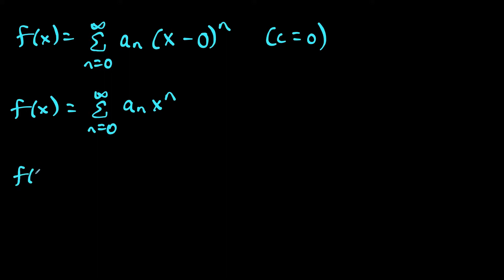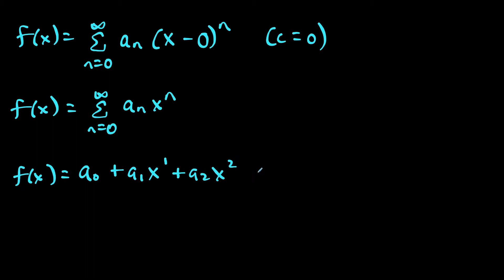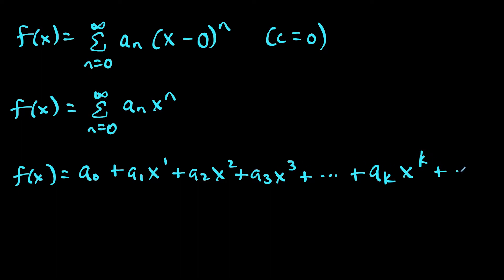The way that we derive this formula is we expand this series. We're going to have a sub 0 plus a sub 1 times x to the first, a sub 2 times x to the second, a sub 3 times x to the third, and so on. We also have a sub k times x to the k, where we'll assume k is bigger than 3. This is an infinite series, so it just goes on forever.